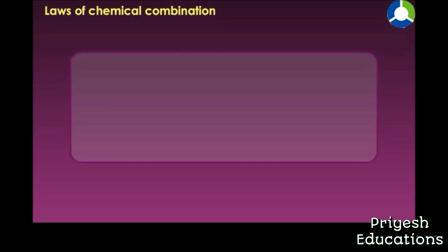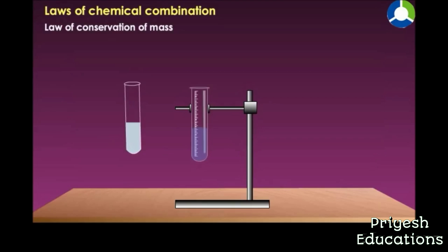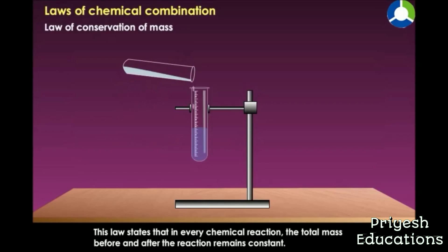Laws of chemical combination. Whenever substances react, they follow certain laws. These laws are called the laws of chemical combination. There are three important laws: the law of conservation of mass, the law of constant proportions, and the law of multiple proportions. These laws led to Dalton's atomic theory of matter. The law of conservation of mass states that in every chemical reaction, the total mass before and after the reaction remains constant.